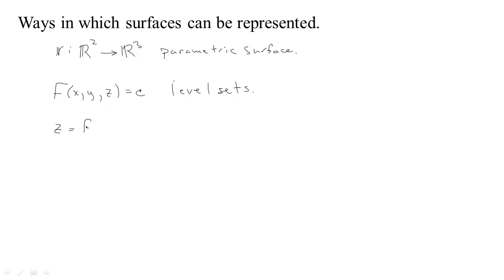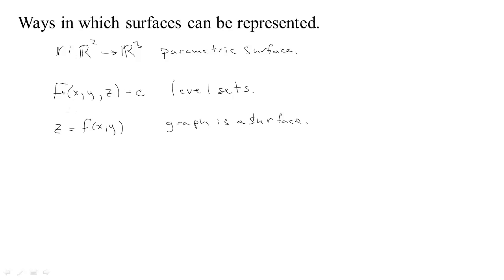We could also have a function with two inputs and one output — for each location in the plane x, y, we have a value z that gives altitude, and that draws a surface. So the graph of a function is a surface. We'll look at each of these three cases to find the correct conversion factor and how to set up the integral.